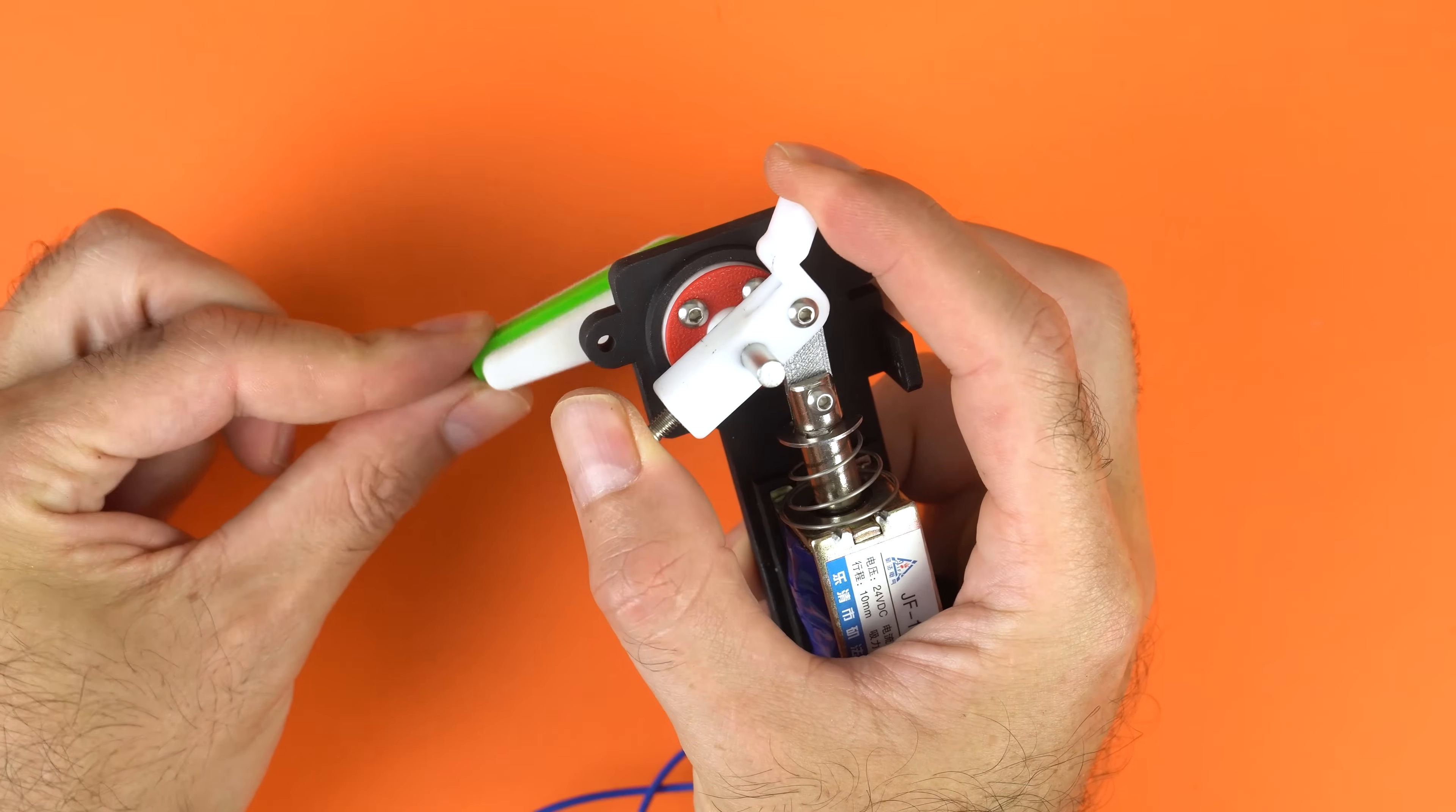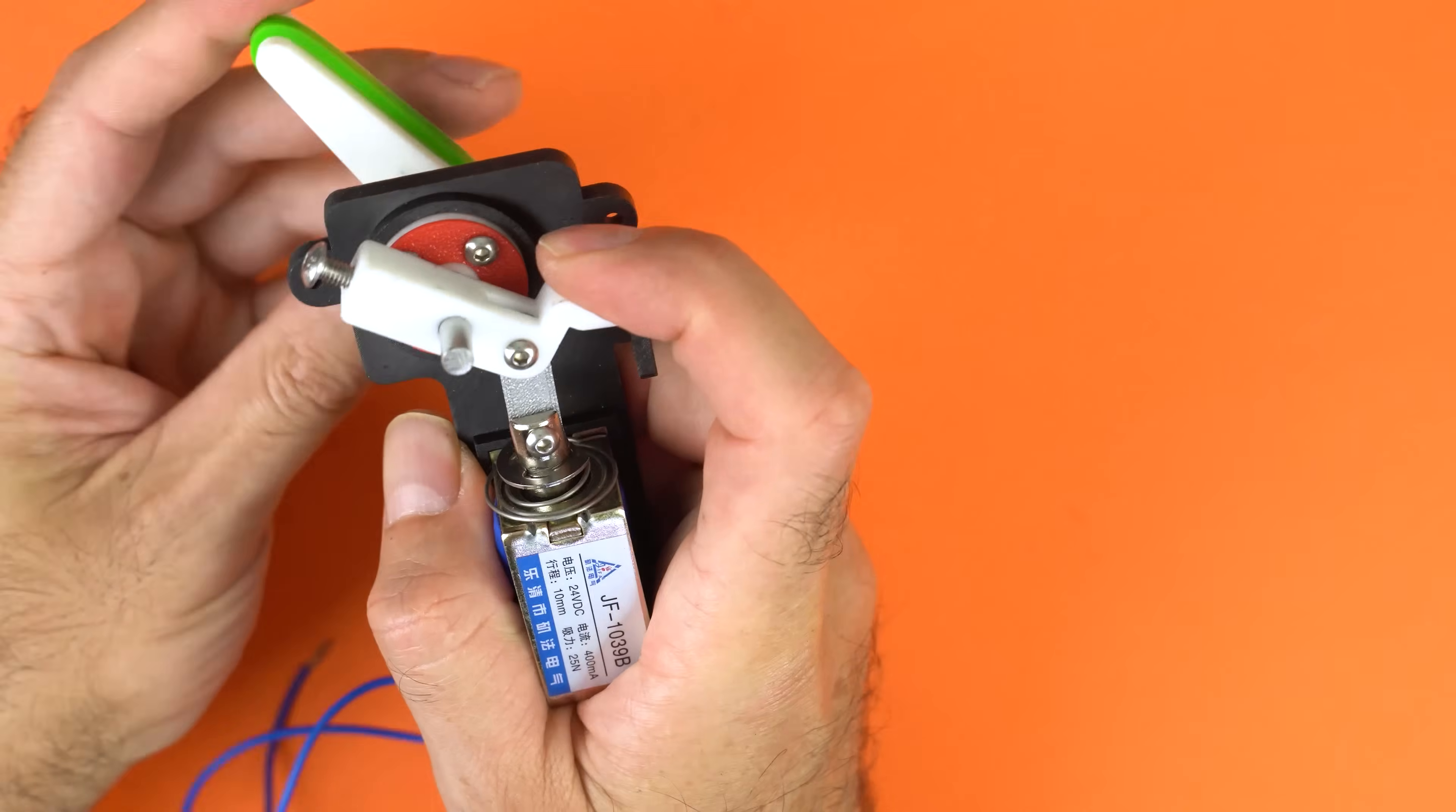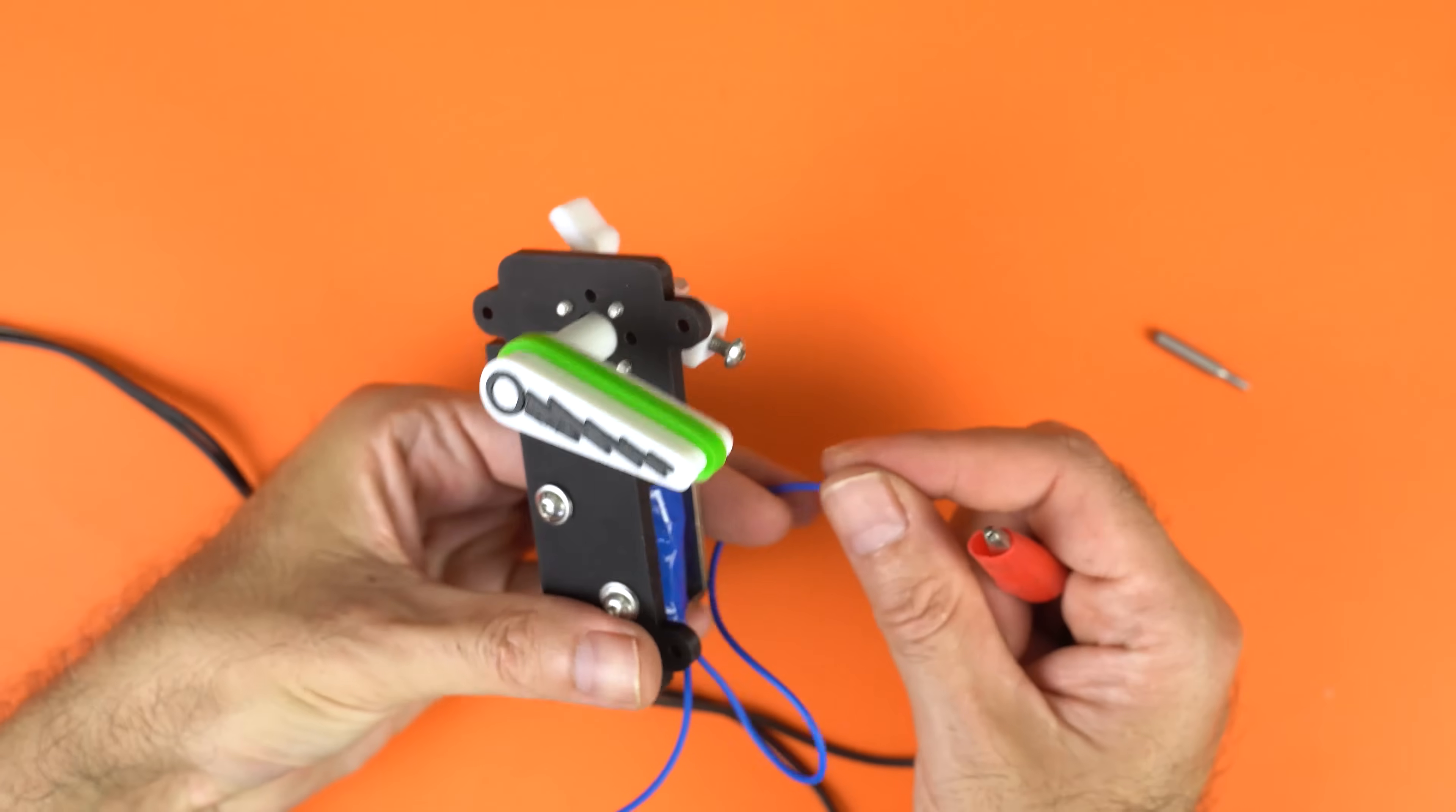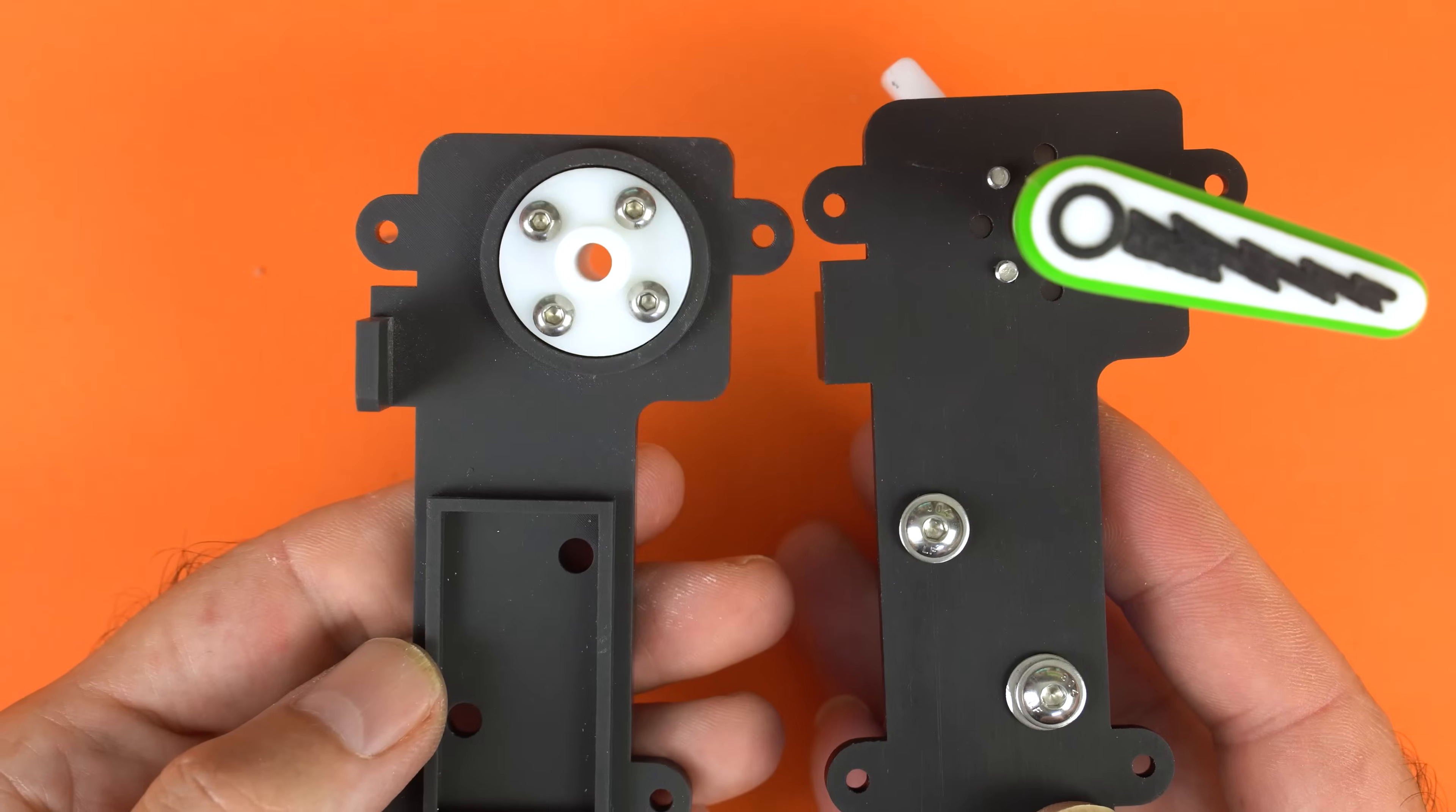As you can see, the flipper bat isn't locked yet and slips on the shaft. You need to tighten the screw firmly so it grips the steel rod. Now it's securely fixed. I mistakenly installed the 24V coil, but I'll replace it later with the proper 12V version. For now, let's test it. I power it up, and it works great. Listen to that sound. I really like it.